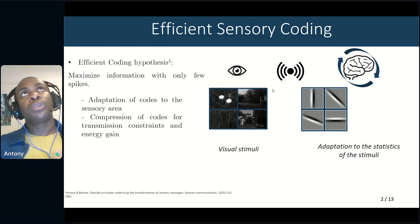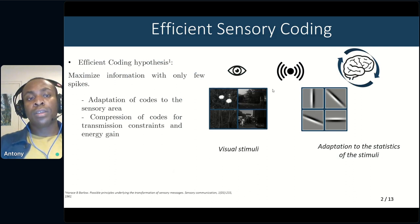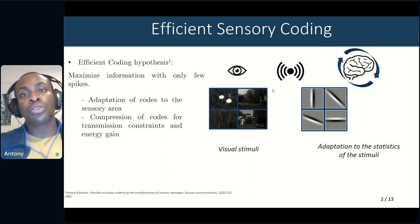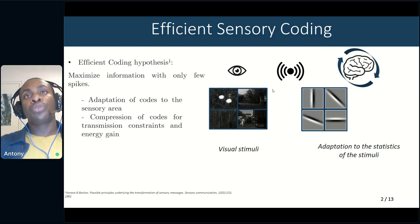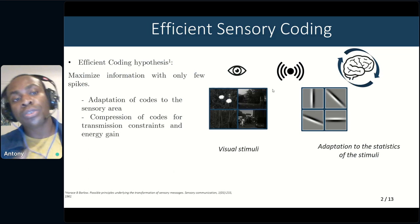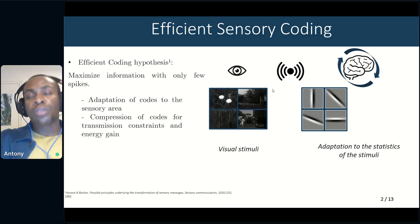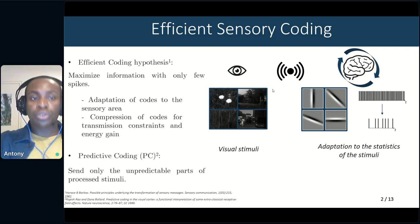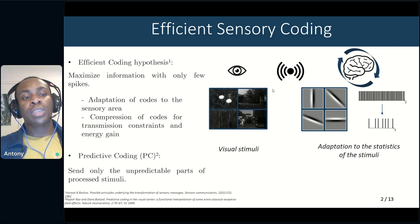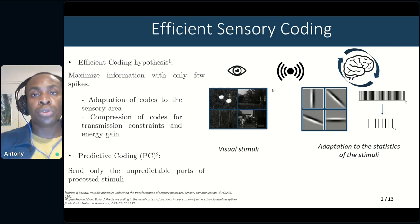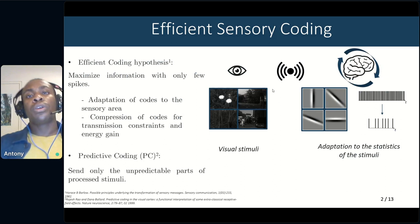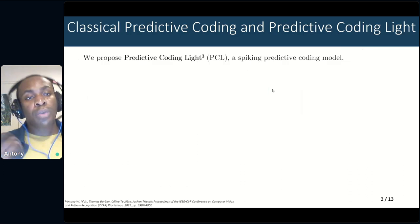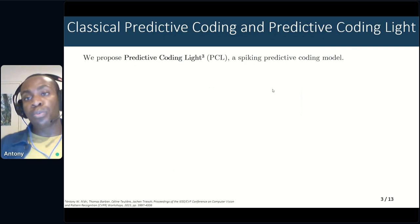We also have different transmission constraints in the brain, such as the need to compress codes in order to efficiently send them, and because neurons cannot spike indefinitely, there is a need for energy. This leads to sparse codes. A sub-part of efficient coding is predictive coding, which postulates that neurons will not transmit their whole representation of input, but rather only the unpredictable parts of those processed stimuli. In my work, I propose predictive coding light, a spiking predictive coding model.